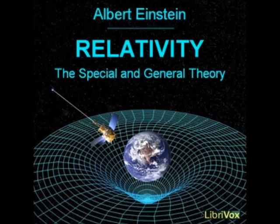The following statement corresponds to the fundamental idea of the general principle of relativity: all Gaussian coordinate systems are essentially equivalent for the formulation of the general laws of nature. According to the special theory of relativity, the equations which express the general laws of nature pass over into equations of the same form, when, by making use of the Lorentz transformation, we replace the space-time variables x, y, z, and t of a Galilean reference body K by the space-time variables x', y', z', and t' of a new reference body K'.